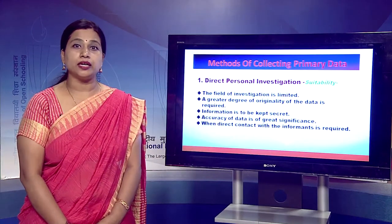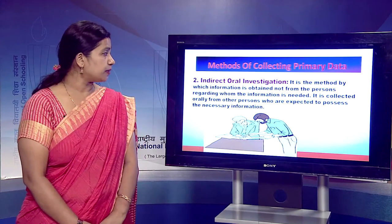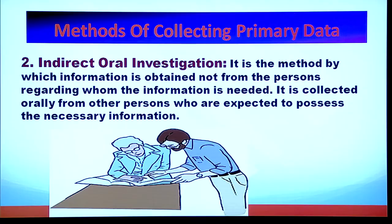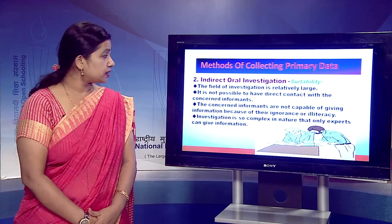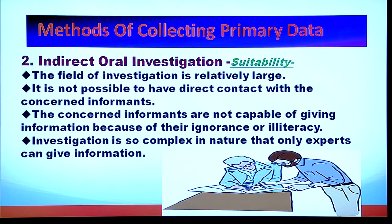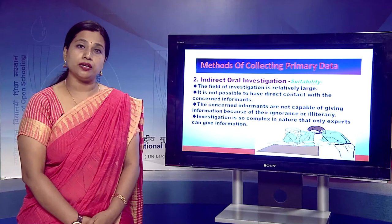The second method is indirect oral investigation. Under this method, the information is obtained by the investigator not from the person directly, but from some other person who possesses such information. We use this method when the field of investigation is too large, when it is not possible to have direct contact with the informant, when the informant is not capable of giving information — such as being illiterate — or when the investigation is so complex that only experts can provide information.